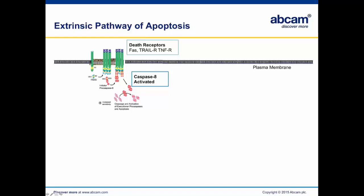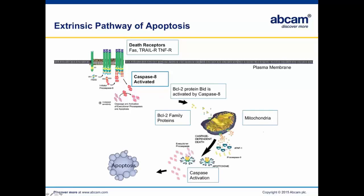I'm going to talk first about the extrinsic pathway of apoptosis and how some of the same signals involved in apoptotic signaling can also trigger necroptosis. Extrinsic apoptosis is so named because it's the activation of the apoptotic pathway by signals from outside the cell. Notable among these is activation of the death receptors — FAS/TNF receptor — on the cell surface by cognate ligands. When activated, these receptors recruit and activate an initiator caspase, caspase-8. Caspase-8 activation can then activate members of the BCL-2 protein family, which determine whether to permeabilize the outer mitochondrial membrane. Permeabilization releases proteins normally sequestered inside — among these is cytochrome-C — which binds the adapter APAF-1 and activates a full-blown caspase cascade, leading to apoptotic cell death.